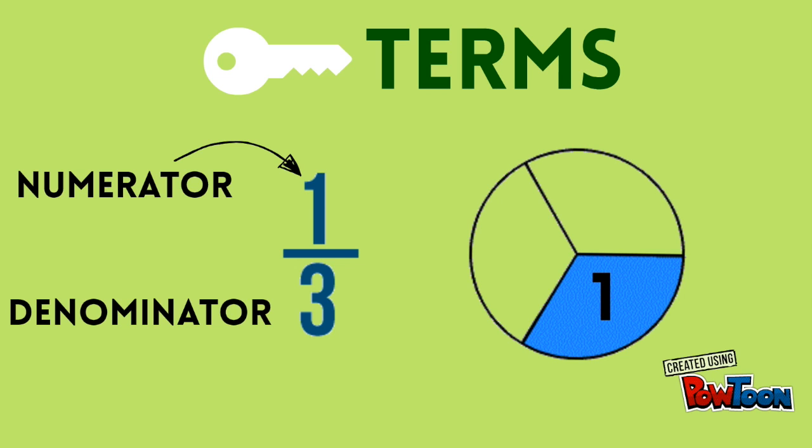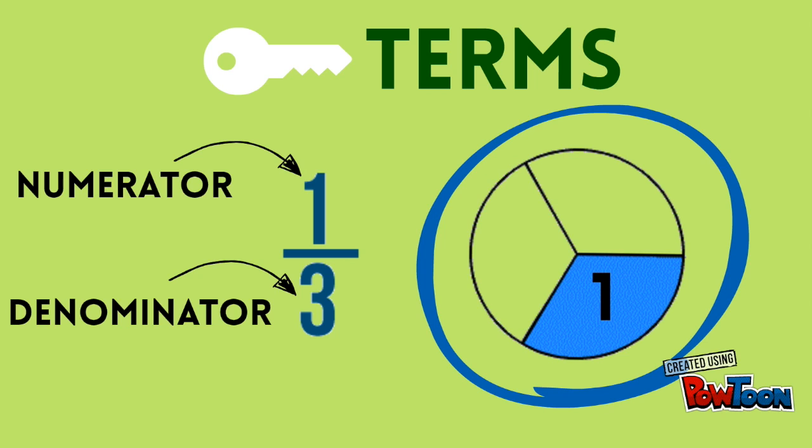The bottom number is the denominator. The denominator is the name of the fraction. It tells you the total number required to make a whole. In this fraction, three parts makes a whole, so we name the denominator 3.